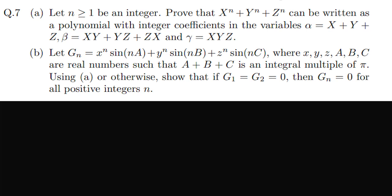Let n ≥ 1 be an integer. We need to prove that x^n + y^n + z^n can be written as a polynomial with integer coefficients in the variables α, β, and γ, where α = x + y + z, β = xy + yz + zx, and γ = xyz.